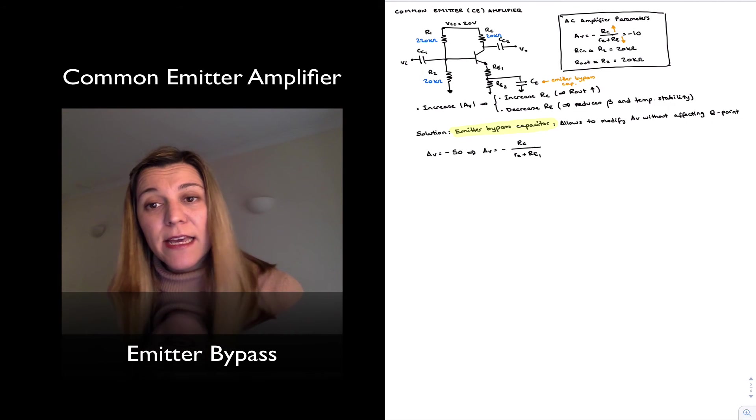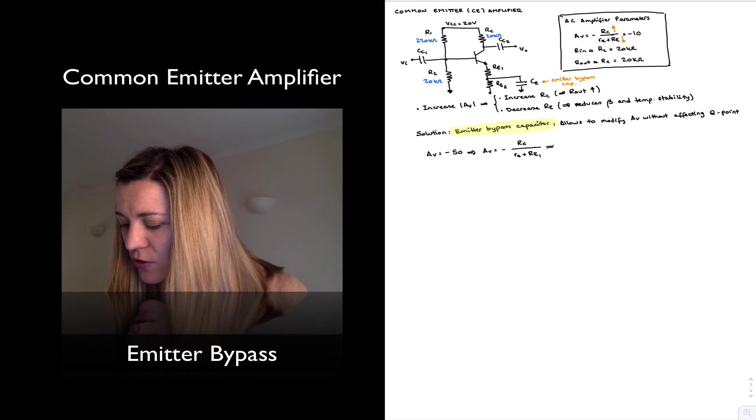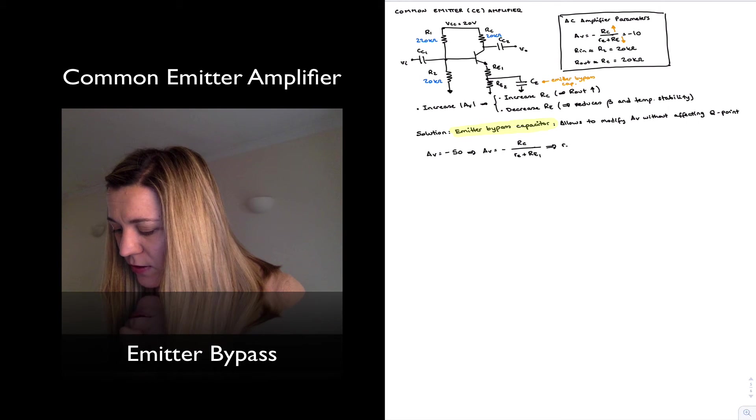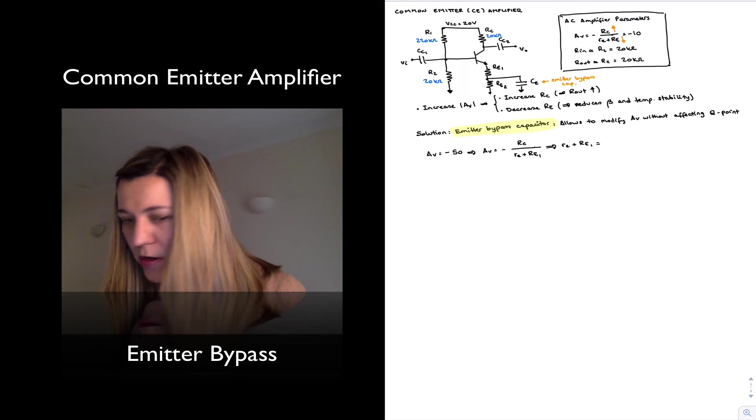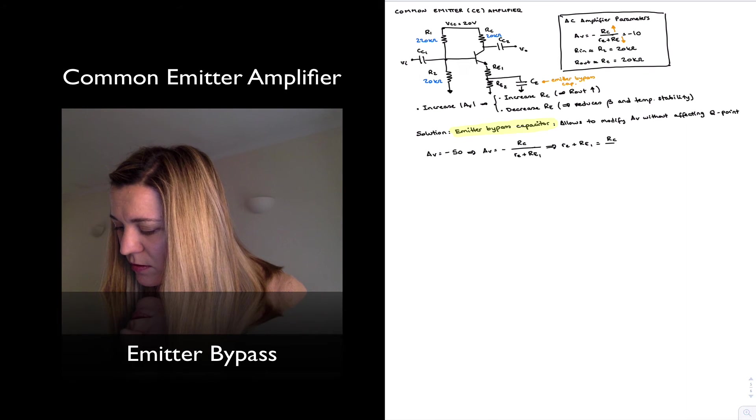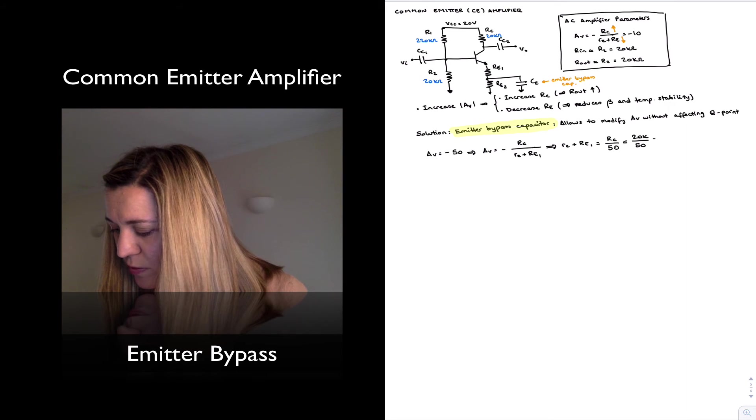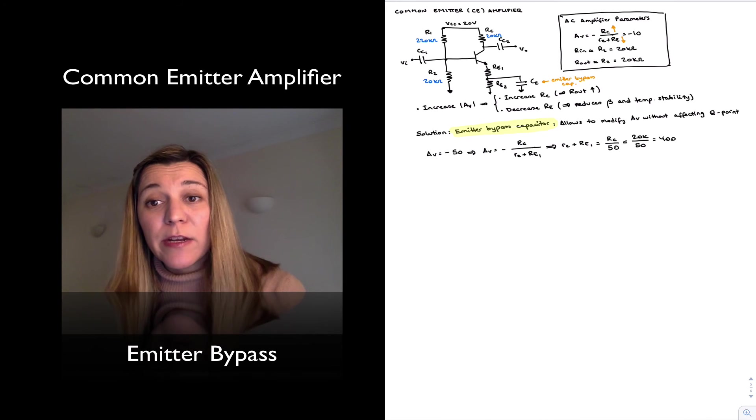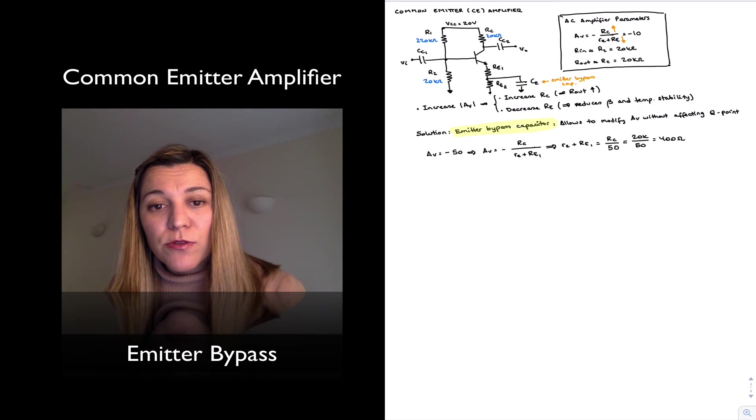Remember, this is the AC gain, so we're looking at the AC equivalent circuit. I can solve this expression and I get RE plus RE1 is equal to RC divided by 50. And RC is equal to 20K. So basically that gives me that the sum of little RE plus RE1 needs to be 400 ohms. Since little RE is equal to 50 ohms, that means that RE1 must be equal to 350 ohms, so that the sum of the two gives me 400.